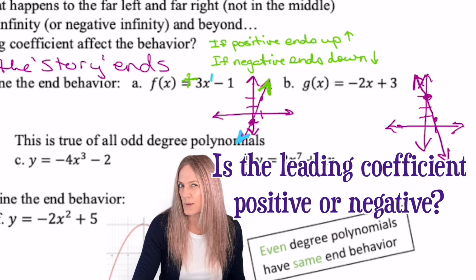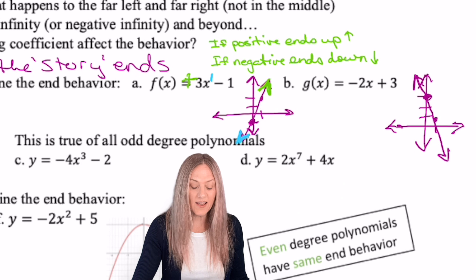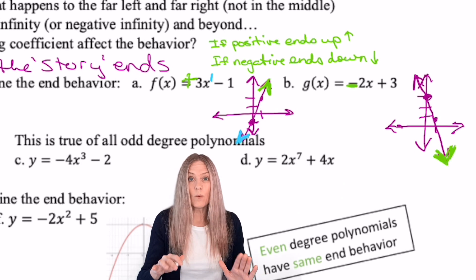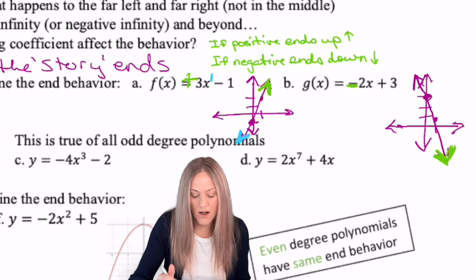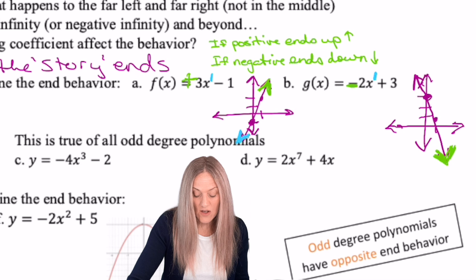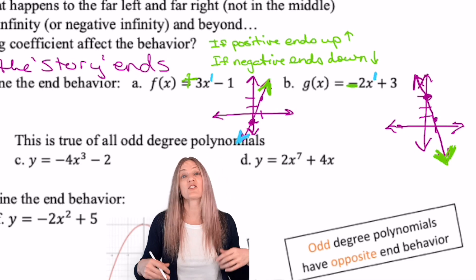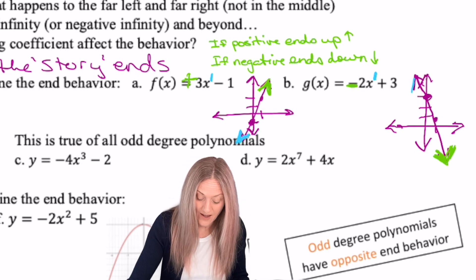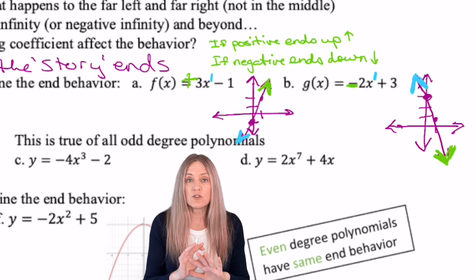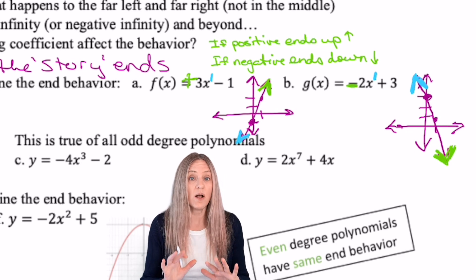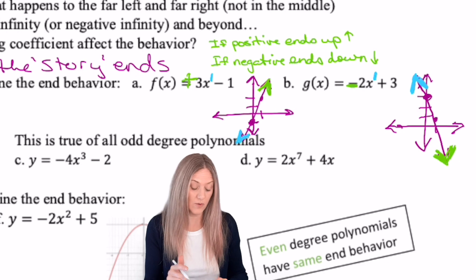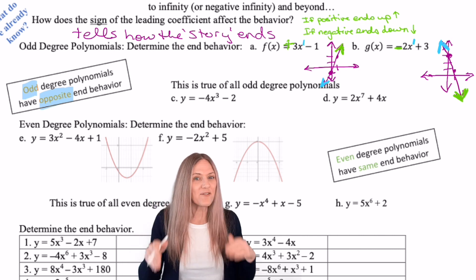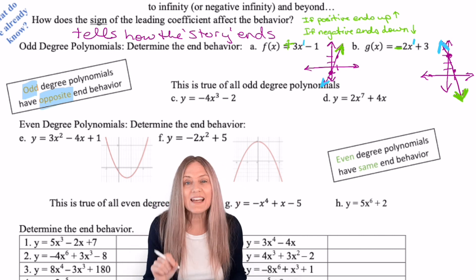Example B. Is the leading coefficient positive or negative? It's negative. So the story ends down. But what degree is it? The degree is one and that's odd. So it means it starts opposite — if it ends down, it must have started up. The leading coefficient rule is true no matter what degree the polynomial is. If it's an odd degree, we always have opposite end behavior. Lines either go up-down or down-up, and that's true of any odd degree polynomial.